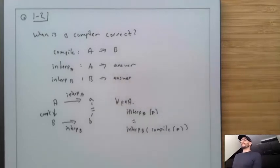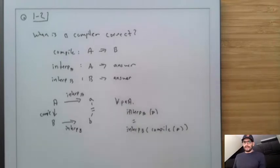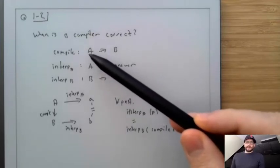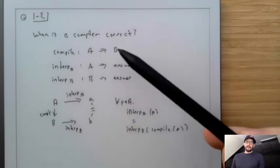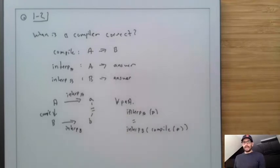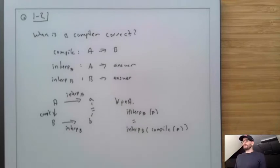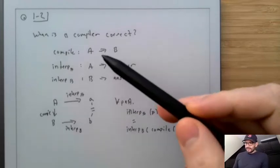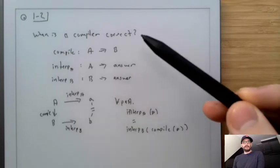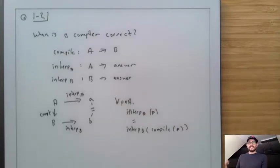What we're going to do in this class is structure our compiler by writing a simple interpreter for the input language and a simple interpreter for the output language, and literally check that the answers are always the same. One of the things I'm going to have you do is write something that randomly generates A programs. By randomly generating A programs, you can run them and get their answer, compile them to get a B program, run it and get its answer — giving you basically an infinite set of test cases.